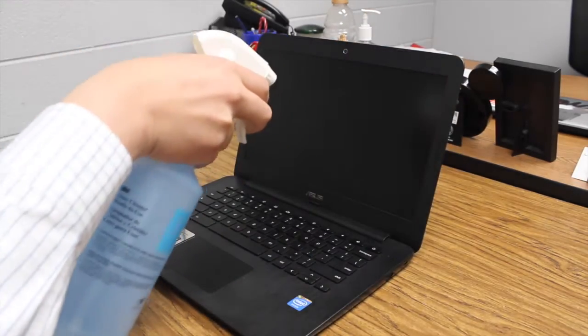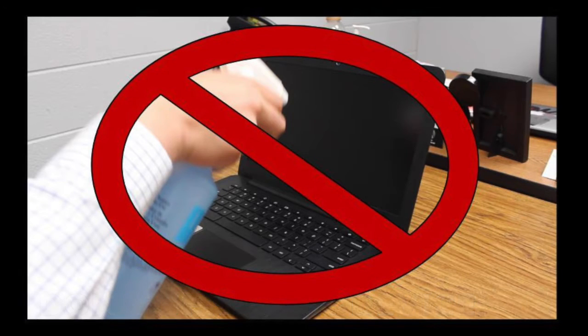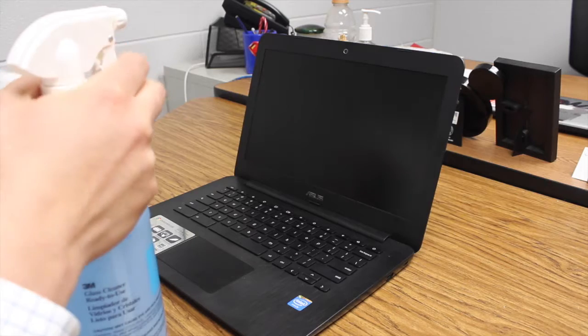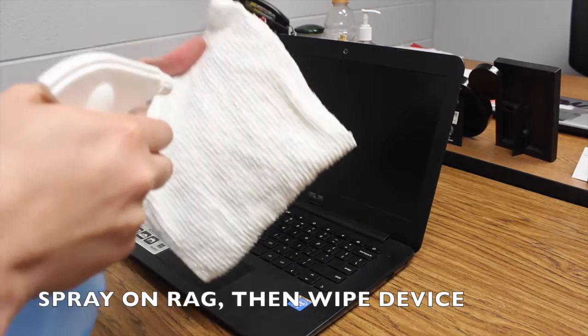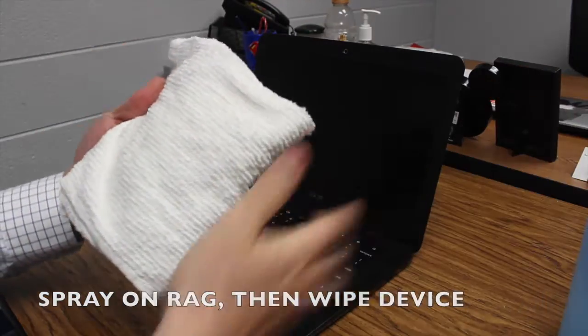When cleaning the device, one thing to never do is to never spray cleaning solution directly onto the Chromebook or any electronic device. Instead, it is always best to spray cleaning solution onto a rag and then use that rag to wipe down the Chromebook.